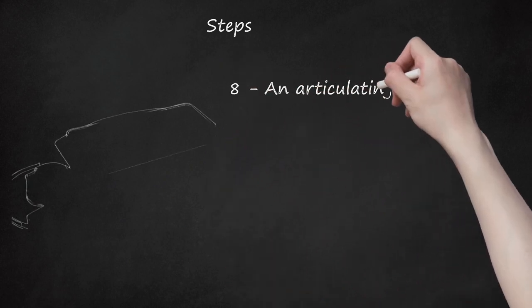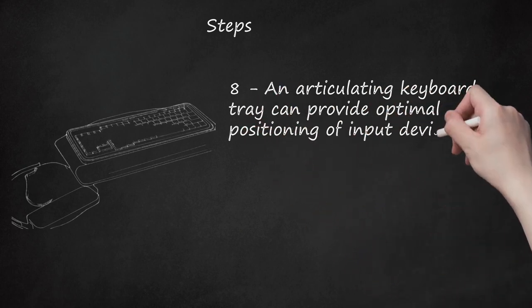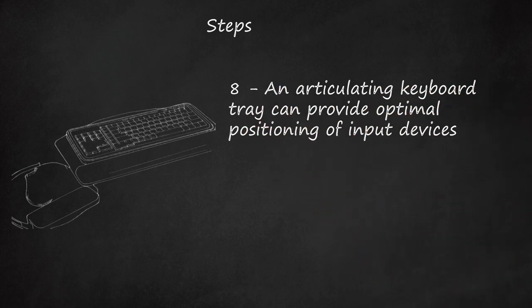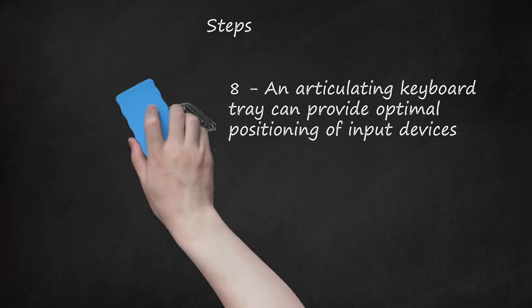8. An articulating keyboard tray can provide optimal positioning of input devices. However, it should accommodate the mouse, enable leg clearance, and have an adjustable height and tilt mechanism. The tray should not push you too far away from other work materials, such as your telephone. If you do not have a fully adjustable keyboard tray, you may need to adjust your workstation height and the height of your chair, or use a seat cushion to get in a comfortable position. Remember to use a footrest if your feet dangle.